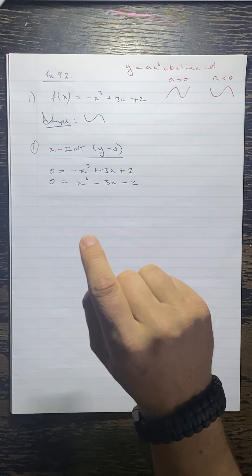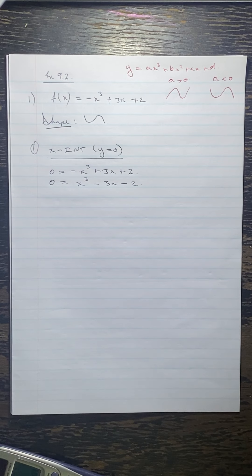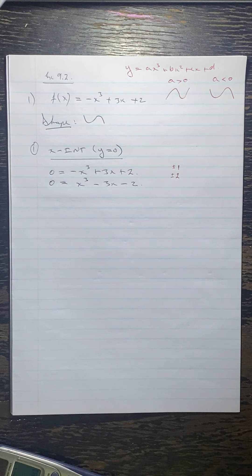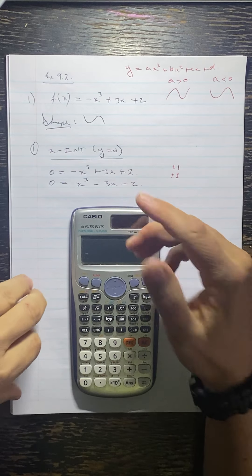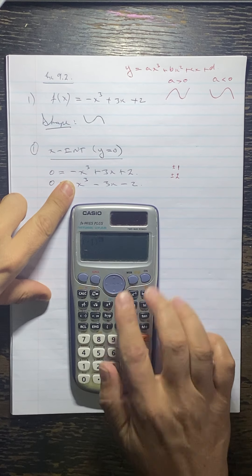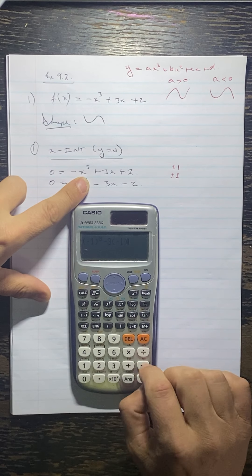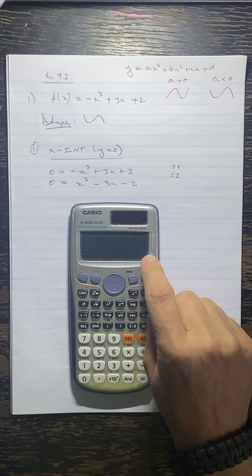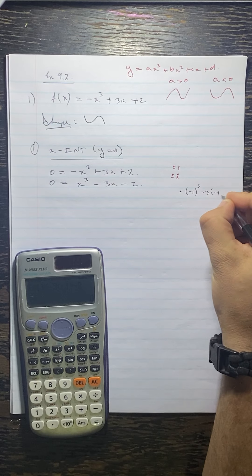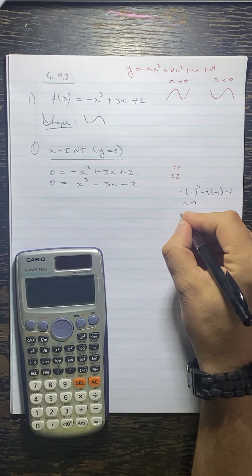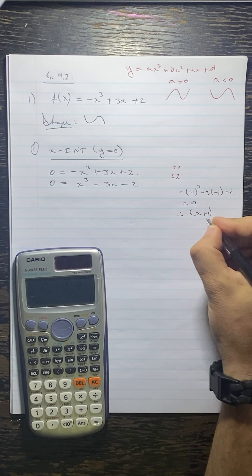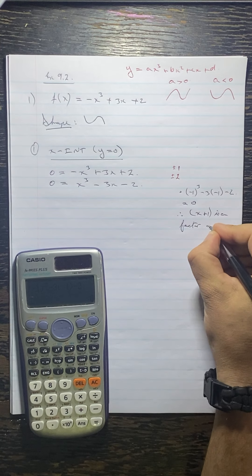In order to factorize this for Grade 12, we need to use the remainder factor theorem. What I do is list the factors of the constant, so the factors are 1 and 2, plus and minus. I put these numbers into the expression — if I get zero, then it is a factor. So I'm going to test minus 1 first: minus 1 cubed minus 3 times minus 1 minus 2. And there we have it — that gives us zero. Therefore, reversing the sign, x plus 1 is a factor of f of x.